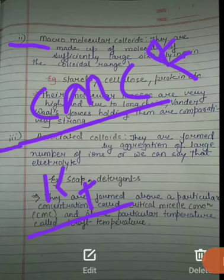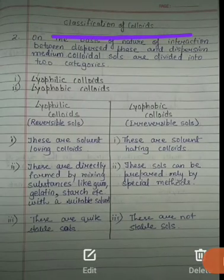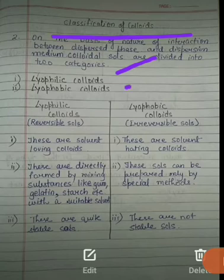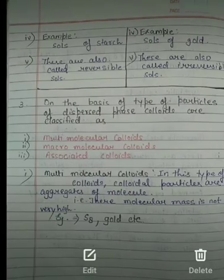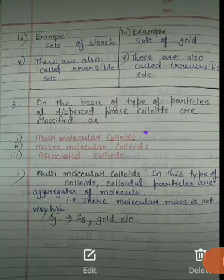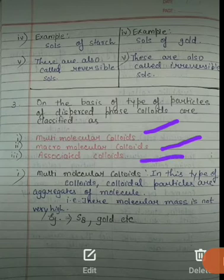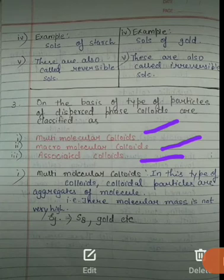So this is all about today's lecture. We discussed classification of colloids based on nature of interaction — lyophilic (solvent-loving) and lyophobic (solvent-hating). We also studied classification based on type or size of particle: multi-molecular colloids where small molecules like S8 and gold are aggregated; macromolecular colloids where large molecules like starch and protein are aggregated; and associated colloids where large ions or electrolytes are aggregated, requiring CMC — Critical Micelle Concentration — and Kraft temperature. Thank you class.